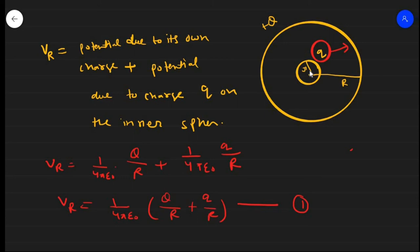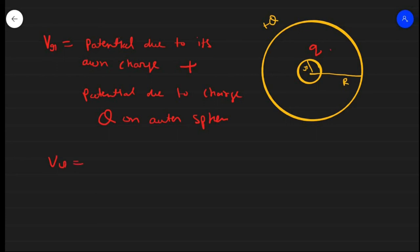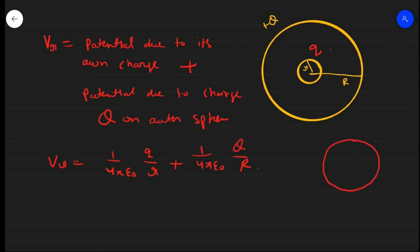Now we find the total potential on the small inner sphere of radius r. The potential V_r equals the potential due to its own charge plus the potential due to the outer shell's charge Q. That gives V_r = (1/4πε₀)(q/r) + (1/4πε₀)(Q/R). The second term uses R because the potential inside a spherical shell is constant and equal to the potential at its surface. Let us call this Equation 2.